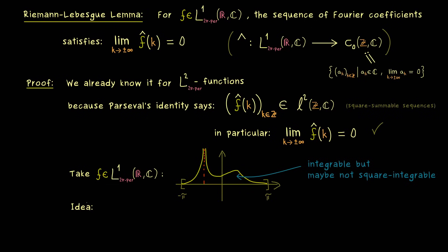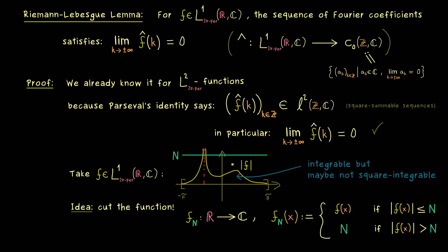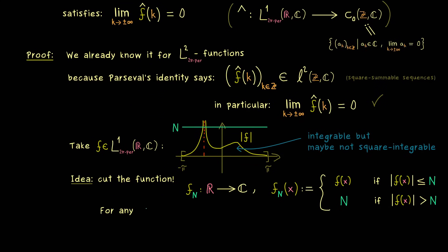The simple idea is to make the function square integrable by making it bounded — we just cut the function at the top. We define a truncated function fn, which is 2π-periodic. The definition distinguishes two cases: if the absolute value of f at point x is less than our given n, we keep the value f of x; otherwise, we set it to n. This definition works for any fixed natural number N, and with this bounded fn we are back in L2.